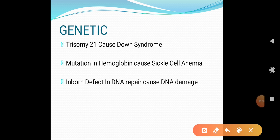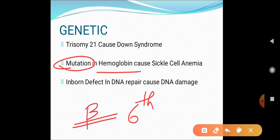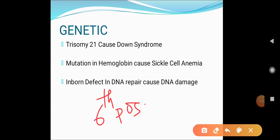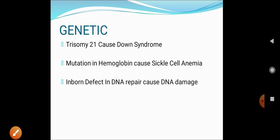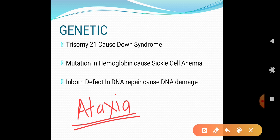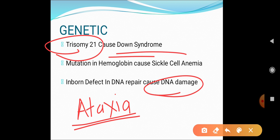The fifth etiological factor is genetic factors. Certain genetic mutations can cause cell injury. For example, a mutation in the beta-globin chain at the sixth position — where glutamate is replaced by valine — leads to sickle cell anemia. Mutations in DNA repair genes, as in ataxia telangiectasia, impair normal DNA repair causing DNA damage, making the individual prone to cell injury and cancer. Trisomy 21 leads to Down syndrome.